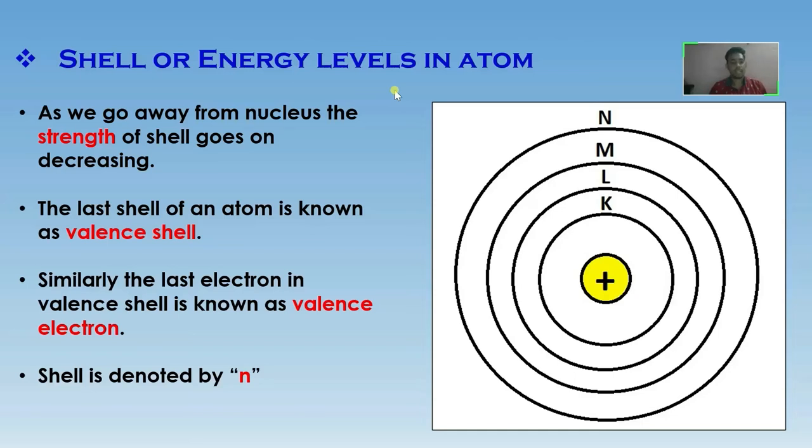An atom has different shells and orbitals in which electrons revolve. The energy level of each shell is different from other shells. First shell is considered as K shell, second shell is L shell, third shell is M shell, and fourth shell is N shell.